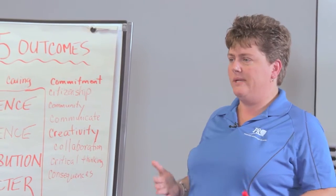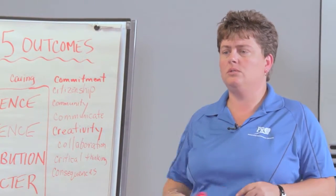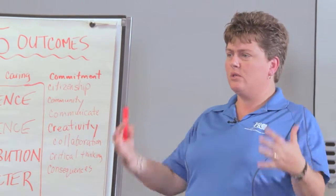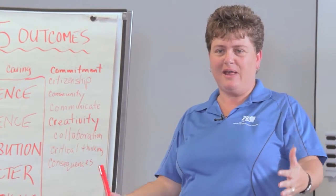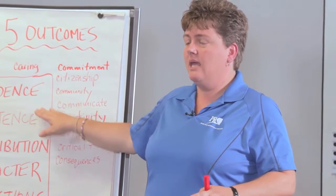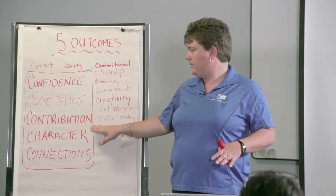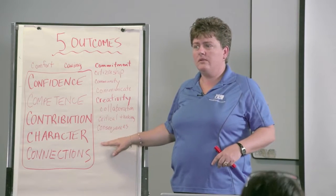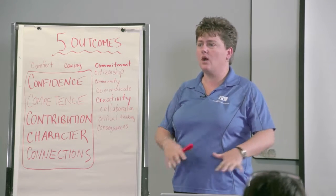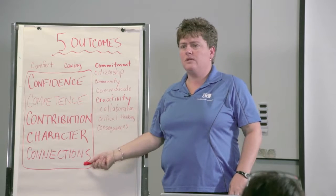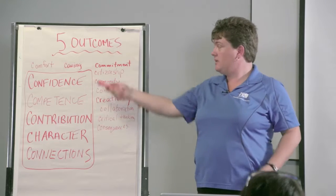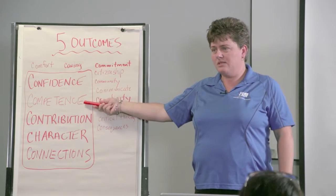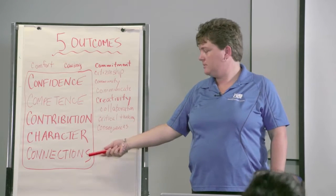If we run a cooking program for 13-year-old boys, the outcomes aren't just that they can go home and cook a nutritional meal with proper portion sizes. We're teaching them those skills to build confidence and competency in the kitchen. They're also learning how they can contribute to their family, to their community. We're helping them build character — understanding who they are and how they fit. Most importantly, they're feeling connected to the other boys they're cooking with and to the organization. Five outcomes: every time we do a program, ask yourself — are we building confidence, increasing competency, making them contributors, developing their character, and are they making connections?